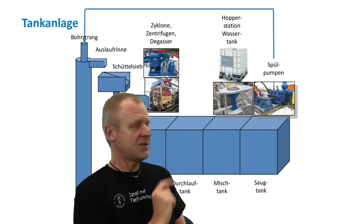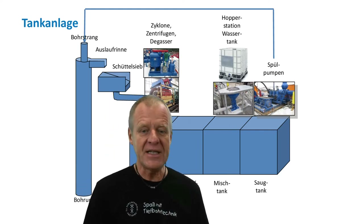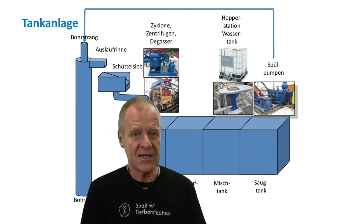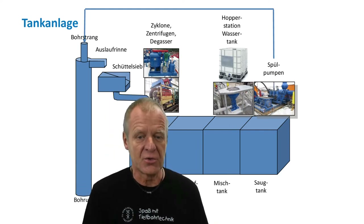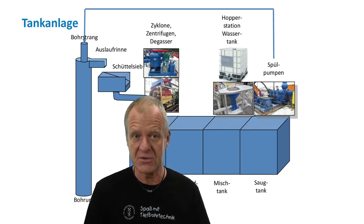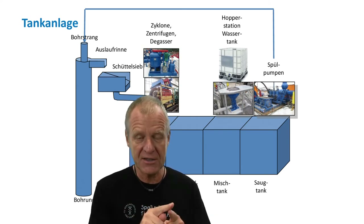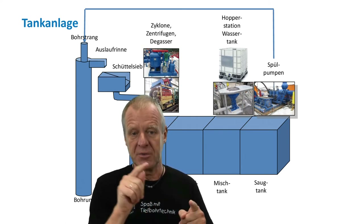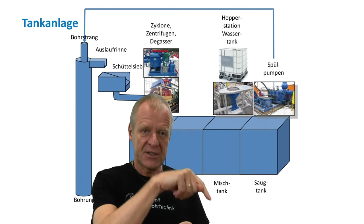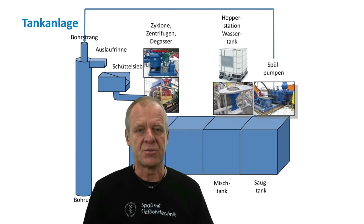Here we have the suction pit. The drilling mud arrives here when it is ready to be pumped into the borehole. The mud pumps take the mud from this pit and pass it to the derrick, where it is pumped down the drill string for the next circulation cycle.